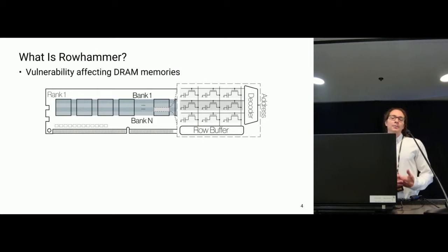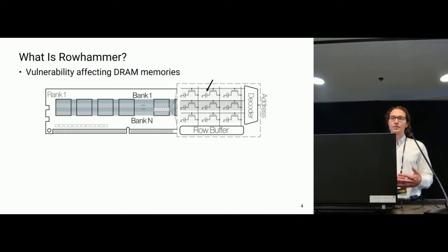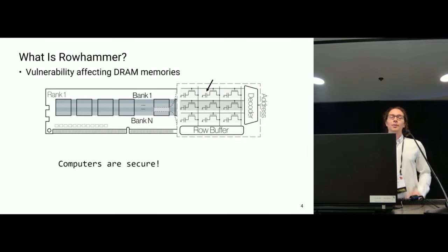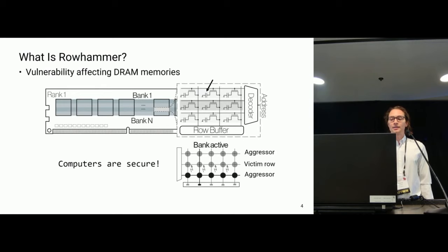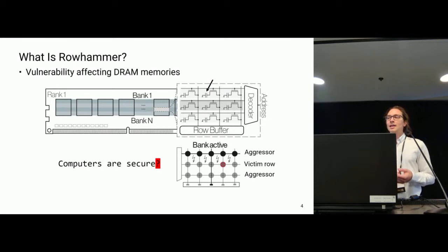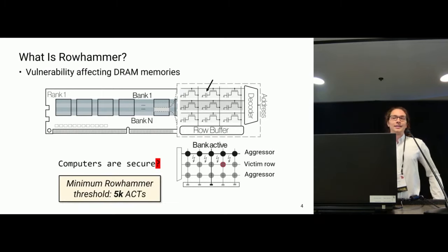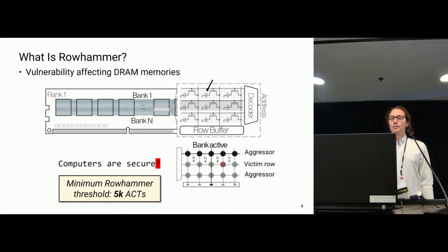So what is exactly Rowhammer? It's a vulnerability that affects DRAM memories, due to the constant leak of charge from internal capacitors. This effect can be accelerated by repeatedly activating rows adjacent to a victim row. For example, if a sentence like 'computer is secure' is saved along a victim row, and the adjacent rows — known as aggressors — are repeatedly activated, this will eventually induce a bit flip, leaving the sentence as 'computer is secure' actually becoming a question. In the worst-case scenario, we're talking about 5,000 activations to induce a bit flip — very, very few.